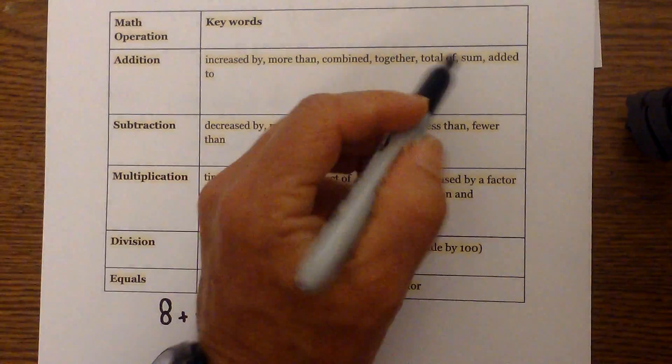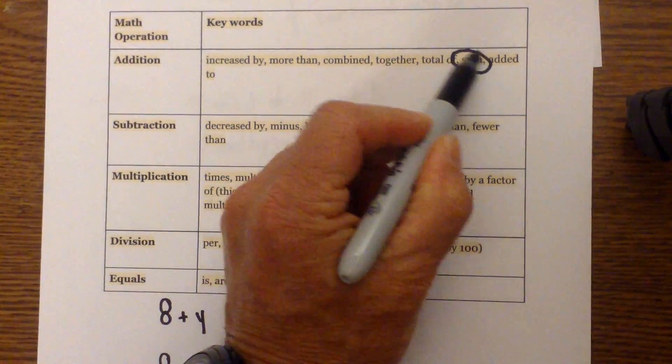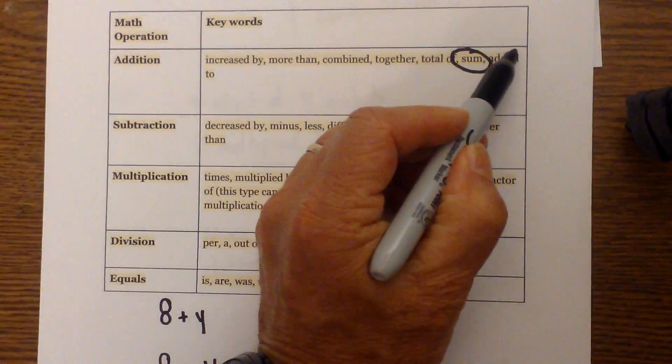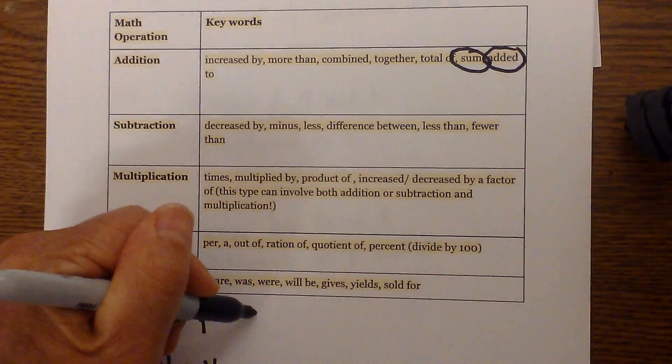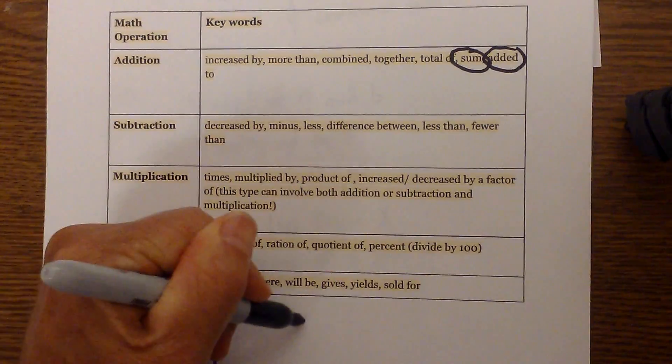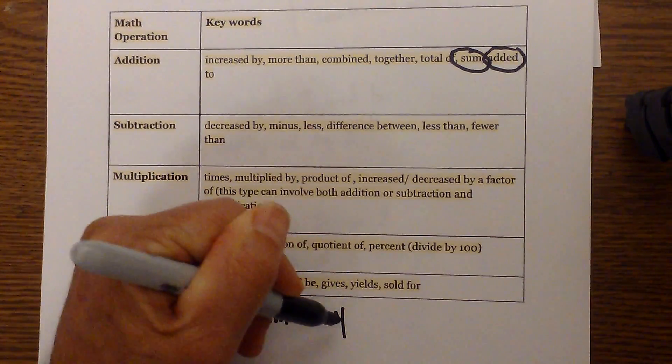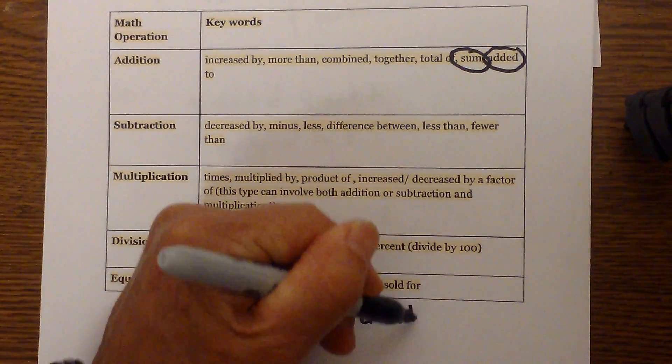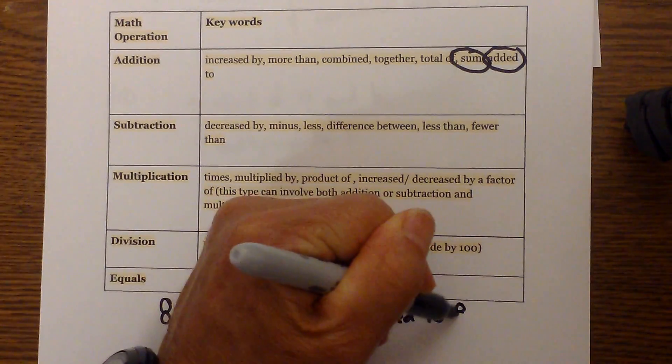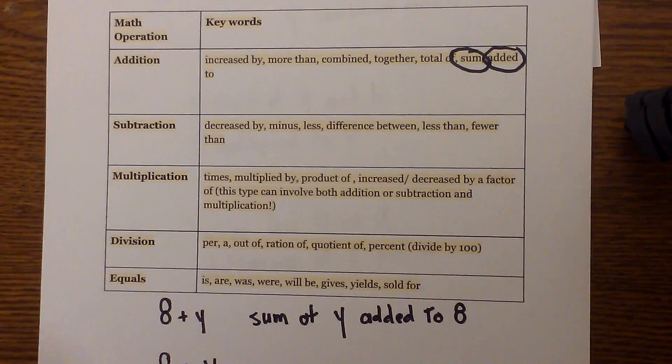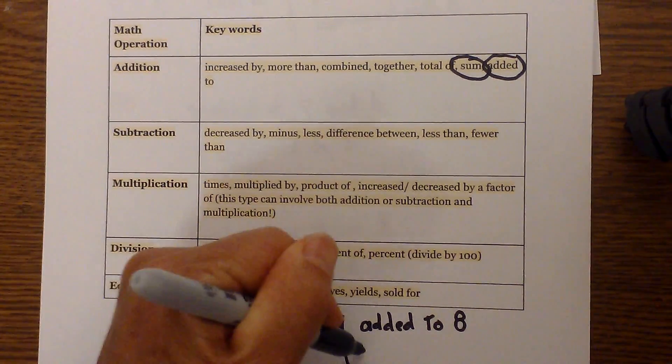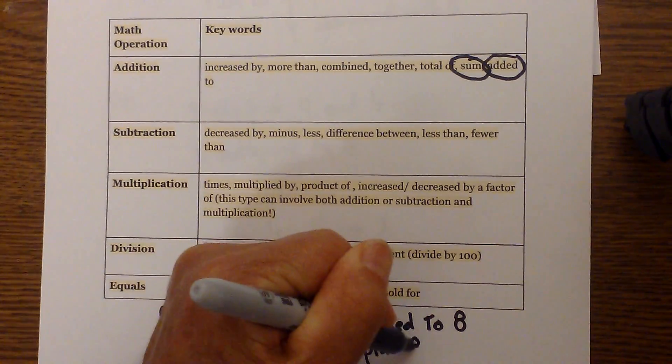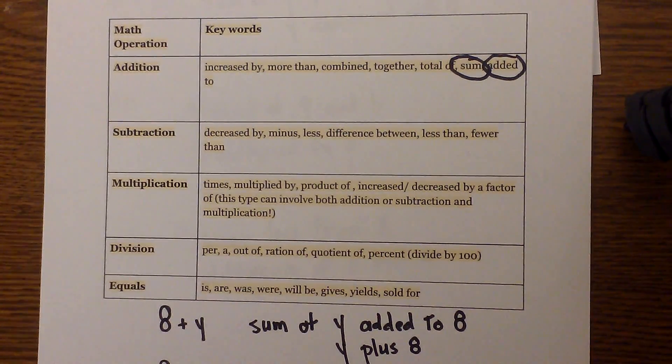Well, I know I have addition, so I can use 'sum' and I can use 'added to'. So I'm going to do the sum of y added to 8. If you don't like the term 'added to', then you could use y plus 8. That would work also, and 'sum' tells you that it's addition.